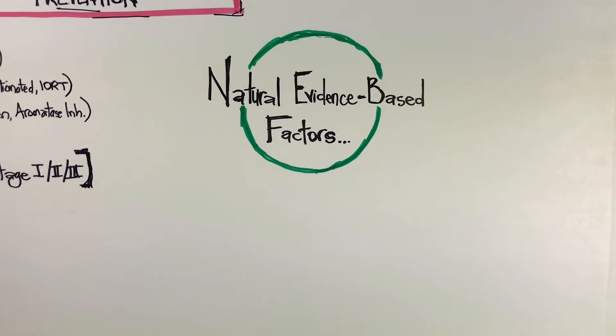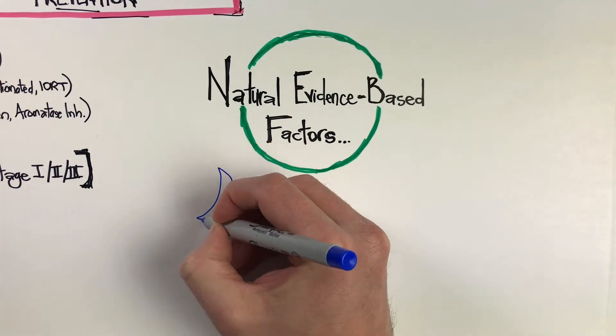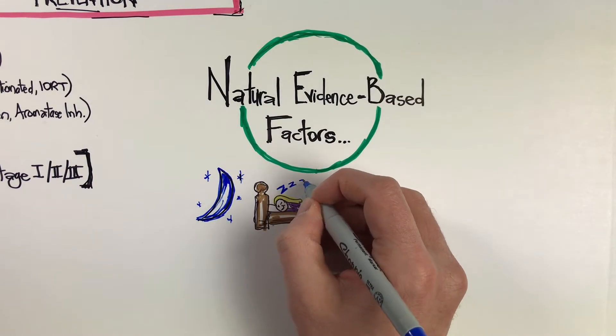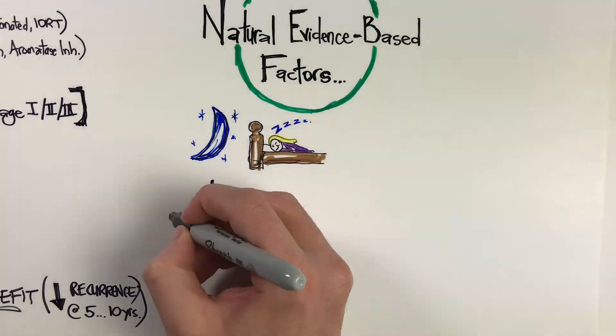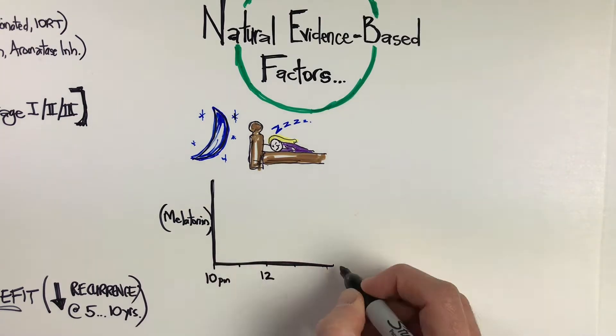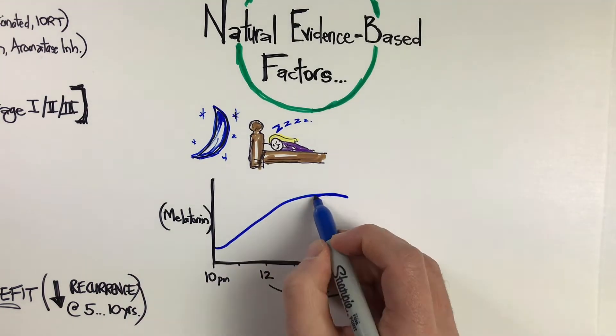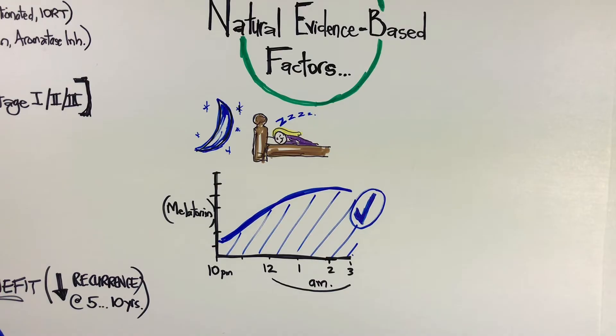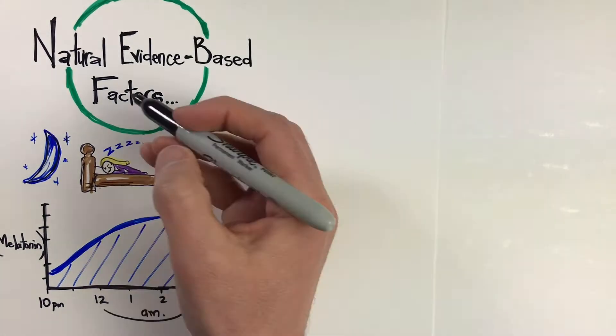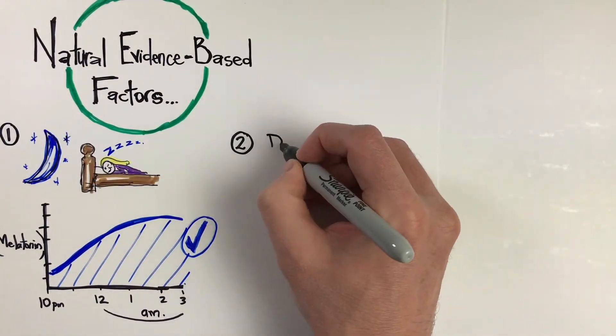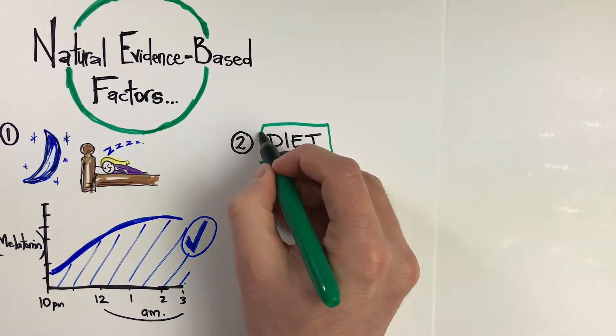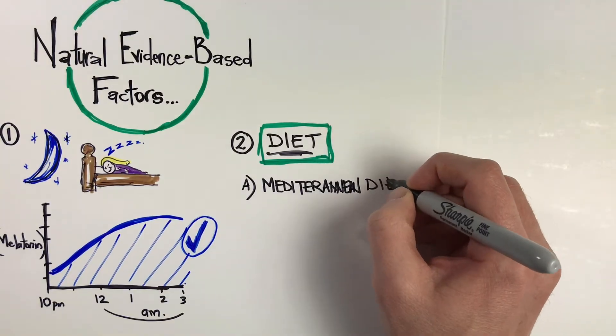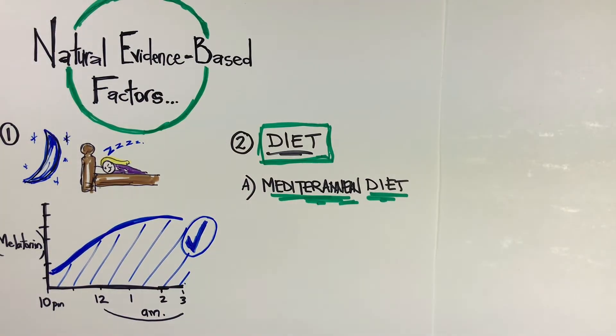If we move forward to natural evidence-based factors, the first one very well established to decrease recurrence risk and incidence is your sleep quality, the duration and length of sleep. The main reason is because of a hormone you release called melatonin, when you sleep and only when you sleep. Melatonin starts to rise in concentration late in the evening and through deep quality sleep, and melatonin is an anti-cancer hormone definitely correlated with decreased risk of recurrence.